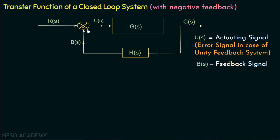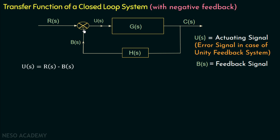We can say that BS is the product of HS and CS. If we observe the summing junction, it is called the summing point that we use to add the feedback signal with the input signal. At this summing point, we can write US equal to RS minus BS. Due to negative feedback, the feedback signal BS is subtracted from the reference signal RS, so the output US equals RS minus BS. Since BS is the product of HS and CS, we can write RS minus CS multiplied with HS.